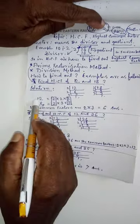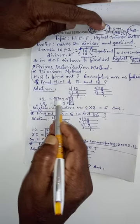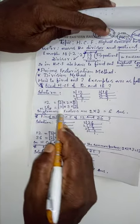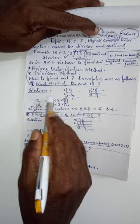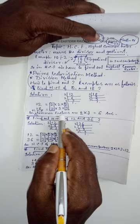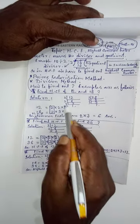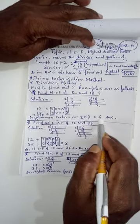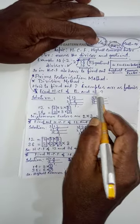For HCF, we write 12 equals 2 into 2 into 3, and 18 equals 2 into 3 into 3. So now comes highest common factor. HCF means common factors: 2 here, 3 here. 2 into 3 equals 6. So 6 is the HCF of 12 and 18.